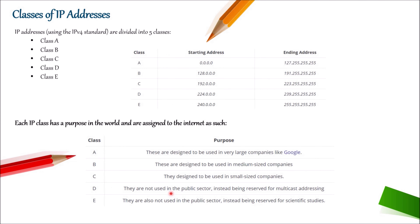There are a total of 5 classes of IP address: Class A, B, C, D, and E. Class A starts from 0.0.0.0 and ends at 127.255.255.255. Class B has a range starting from 128 and ending with 191. Class C has a range of 192.0.0.0 and ends at 223.255.255.255.